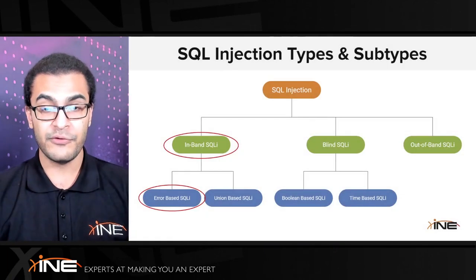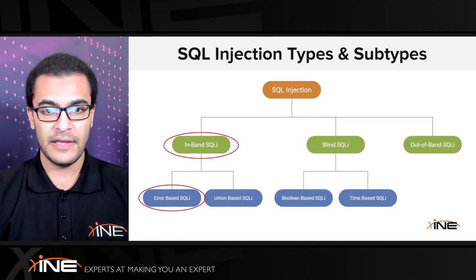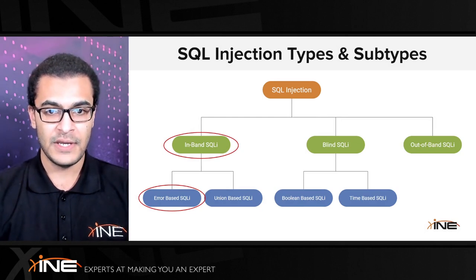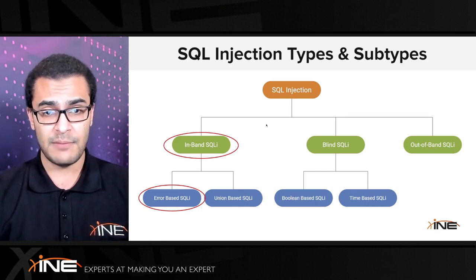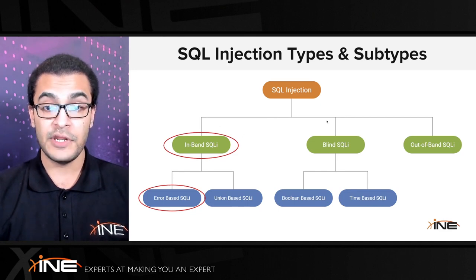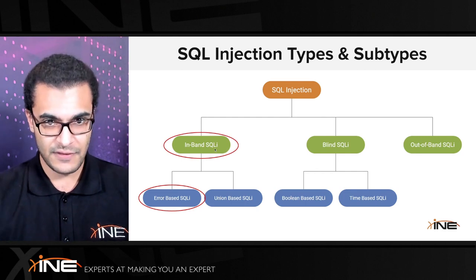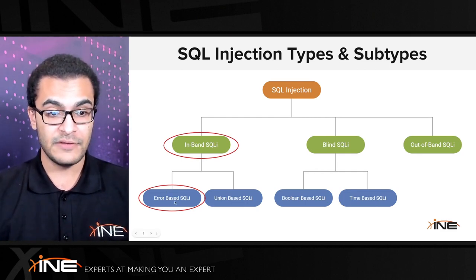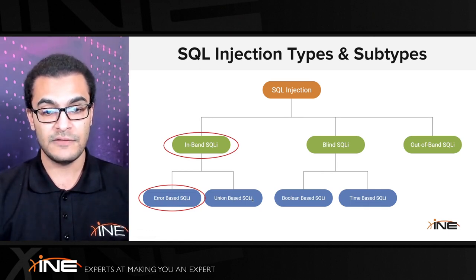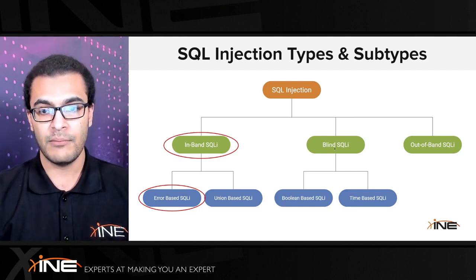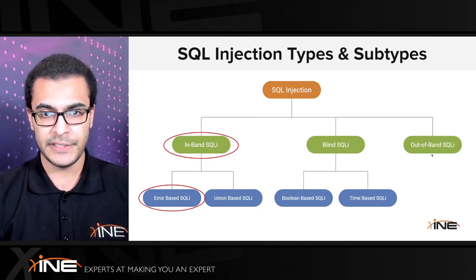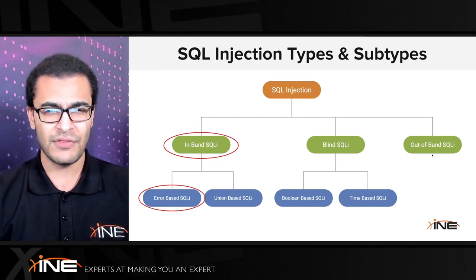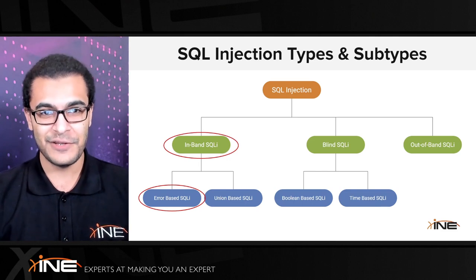We'll revisit the SQL injection types and subtypes hierarchy tree introduced earlier in this course. We're starting off with in-band SQL injection, and in this video we're taking a look at error-based SQL injection. In the next video we'll cover union-based SQL injection, then in the following section we'll look at blind SQL injection subtypes — Boolean-based and time-based. We're not going to be exploring out-of-band SQL injection, although we'll touch on it briefly.